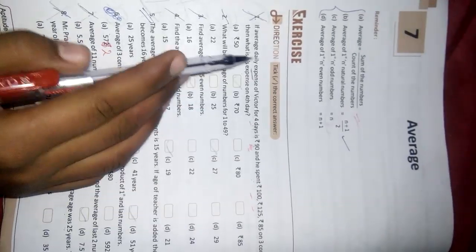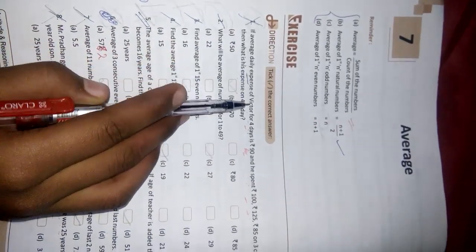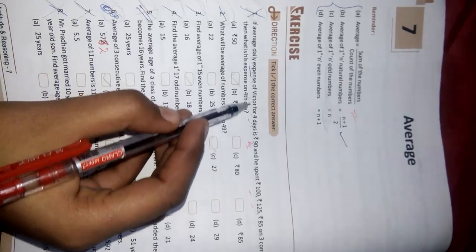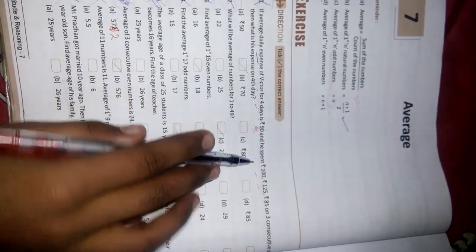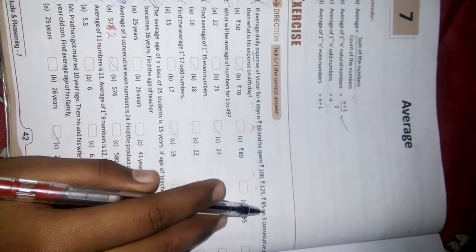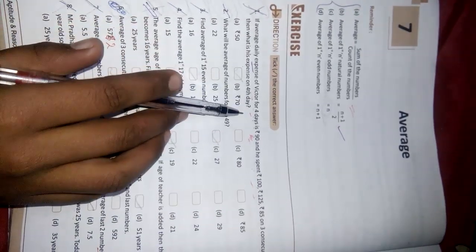So first question is, if average daily expense of Victor, here Victor is the name of a person, for 4 days is Rs. 90. And he spent 100, 125 and 85 on 3 consecutive days. Then what is the expense on 4th day?